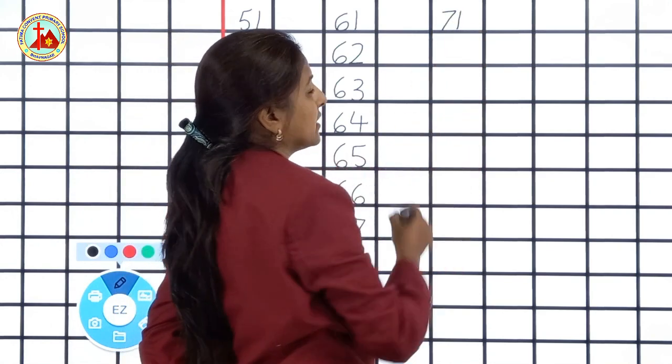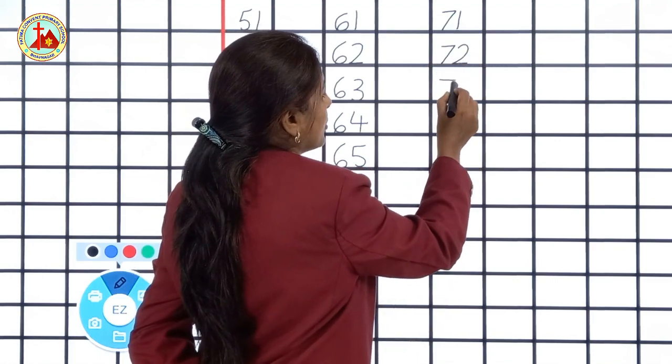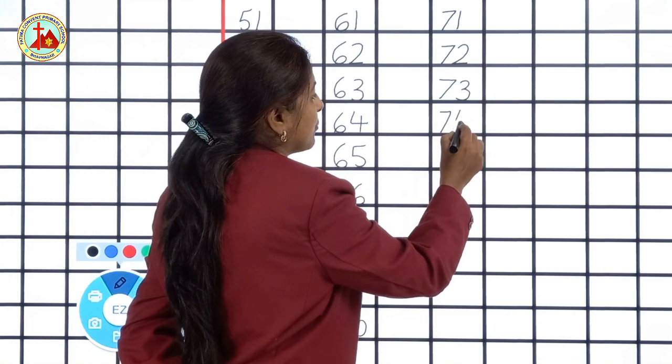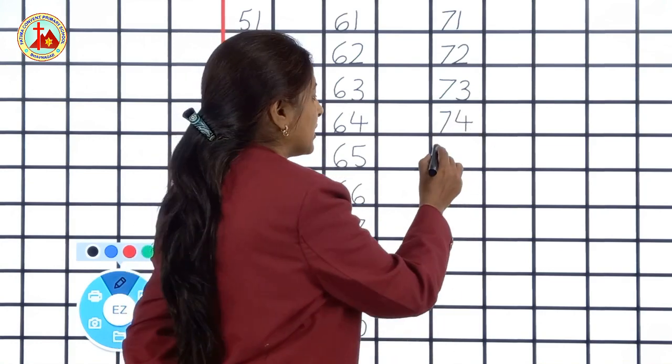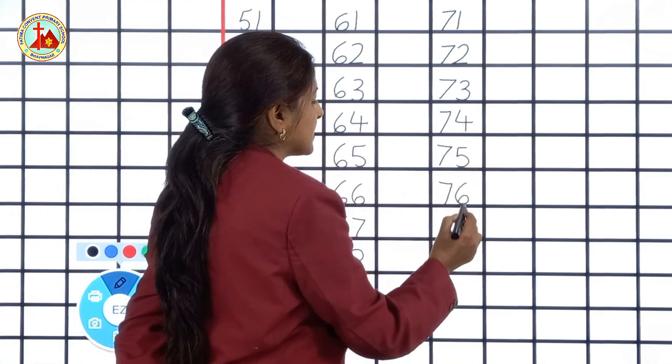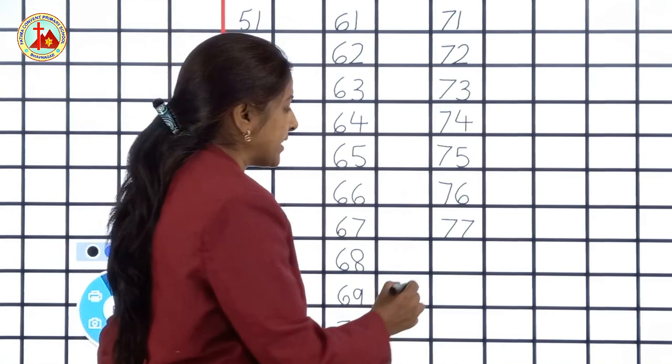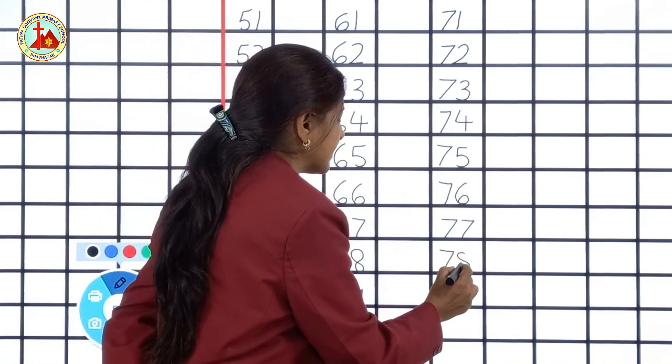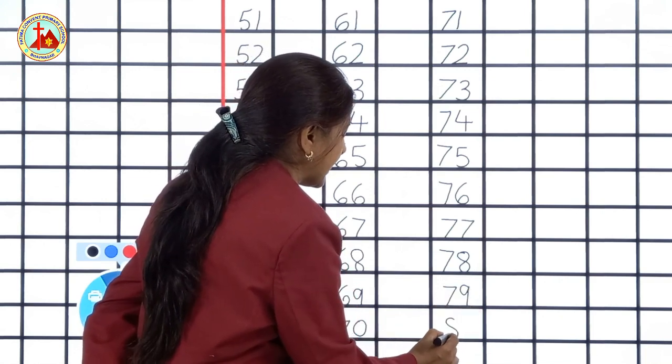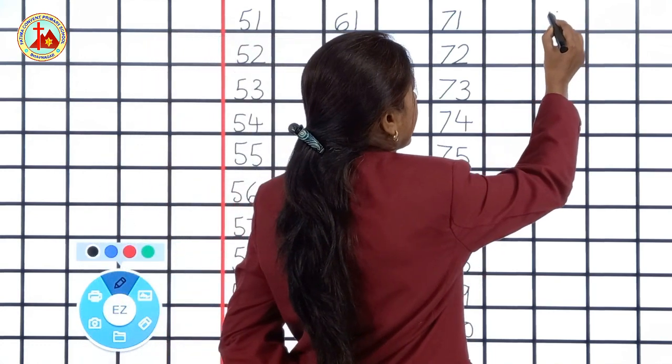Then again leave 1 line and write 71, 72, 73, 74, 75, 76, 77, 78, 79 and 80.